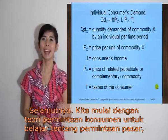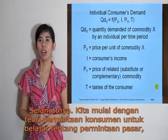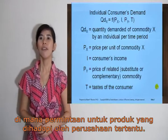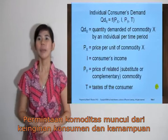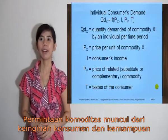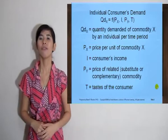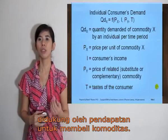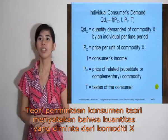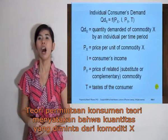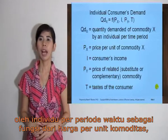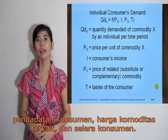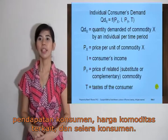Next, we begin by explaining the theory of consumer demand in order to learn about market demand, on which the demand for the product faced by a particular firm depends. Demand for commodity X arises from the consumer's willingness and their ability — for example, from their desire or want for the commodity backed by the income to purchase it. Consumer demand theory states that the quantity demanded of commodity X by an individual for a time period is a function of the price per unit of the commodity, the consumer's income, the price of related commodities, and the taste of the consumer.